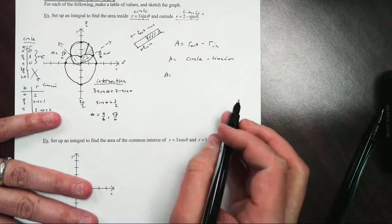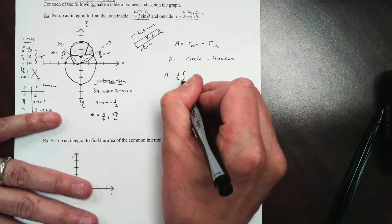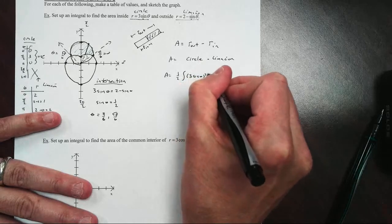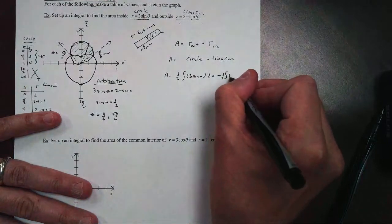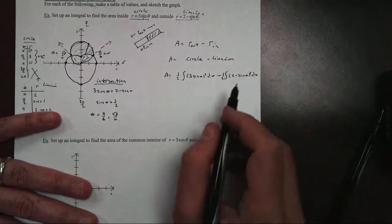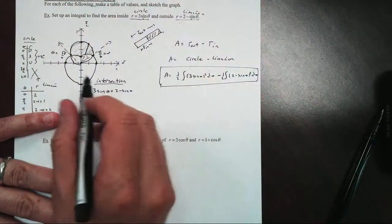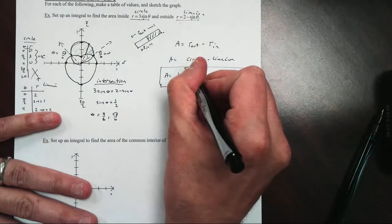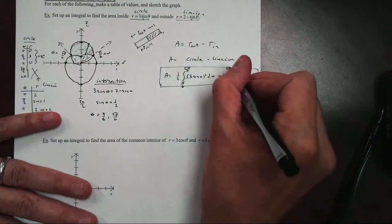So solving this one, if I write it out as an integral for the area of the circle, it's going to be one-half the antiderivative of the circle function, three sine theta squared d theta, minus for the limacon, one-half, two minus sine of theta squared d theta. Now that's my setup. I need a domain. Well, the domain starts at pi over six, ends at five pi over six. And the same thing for the limacon, pi over six to five pi over six.